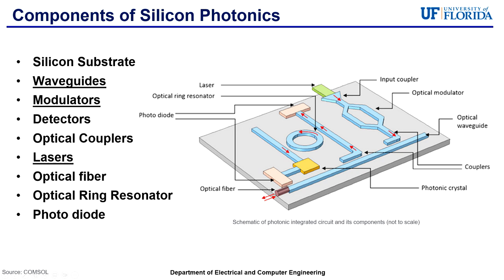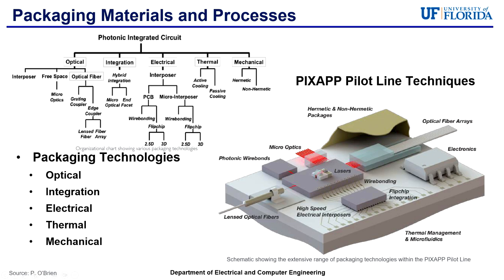Moving on to packaging materials and processes. Packaging for photonic integrated circuits can typically prove to be complex, as there are a wide range of packaging technologies required to produce functional modules. As shown in the top figure, the five packaging technologies in silicon photonics are optical, integration, electrical, thermal, and mechanical technologies. Optical packaging technologies are typically focused on the optical fibers and coupling the fibers. Electrical packaging is focused on the interposer of the silicon photonic chip. Thermal packaging is focused on the cooling aspects of the chip, while mechanical packaging is focused on hermetic and non-hermetic packaging for the overall enclosure of the components to protect them against the environment. Integration packaging technologies are focused on the overall hybrid integration of all of the materials and components together, which can also be the most costly, especially when packaging a mix of photonic and electronic technology together.